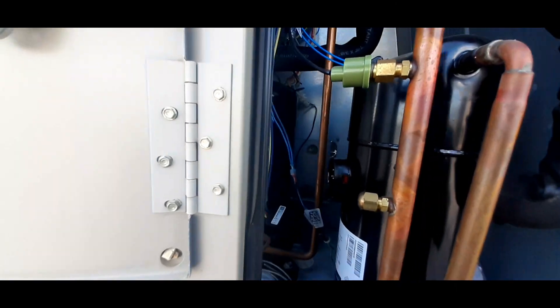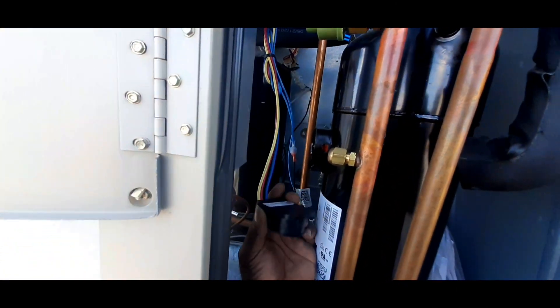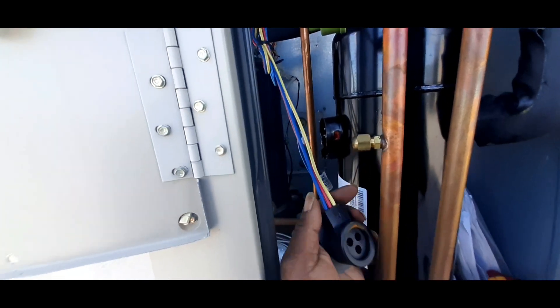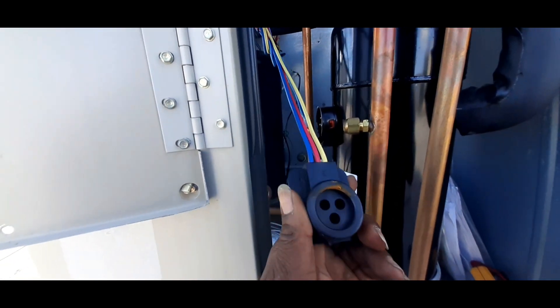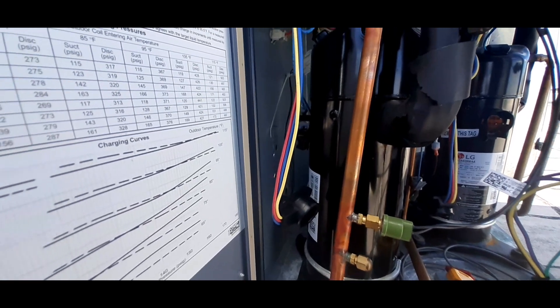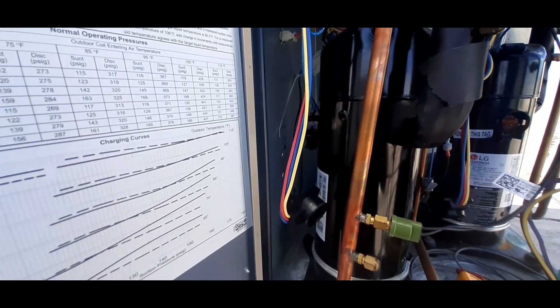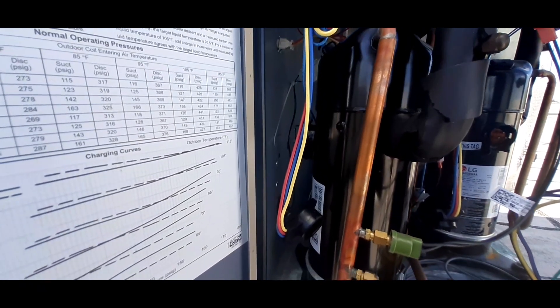All right, so I just ohmed out this compressor. Everything checked out fine, also checked out these wires heading back and these checked out also. Just check the next. All right, so I just checked this compressor for continuity to ground, checking for shorts, also check the windings to make sure that they're reading the same. All three terminals should be within the same range.